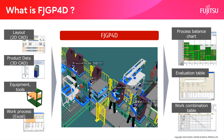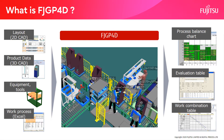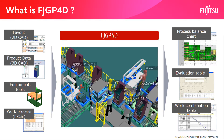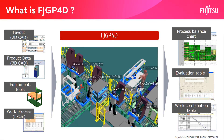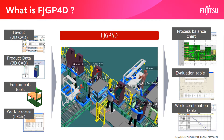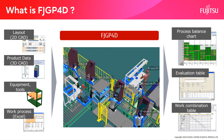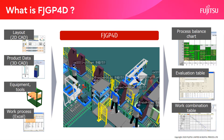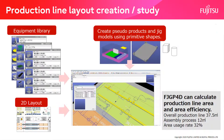The results of the simulation with FJGP4D can be output to the process balance chart, the evaluation table that evaluates productivity and workability numerically, and the work combination table of Excel. Not only can you share the layout of the production line and the image of the walking path of the worker, but you can also perform quantitative evaluation using numerical values.